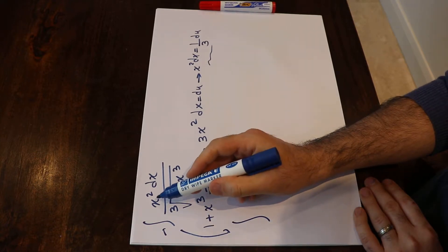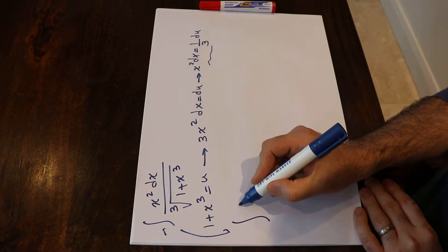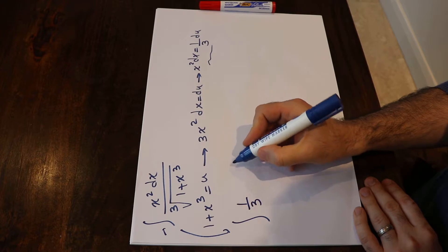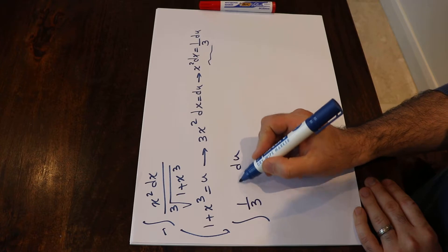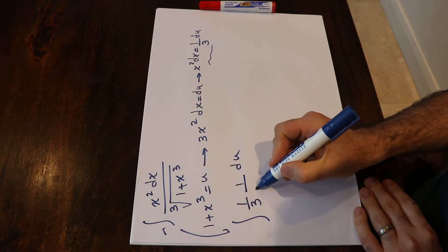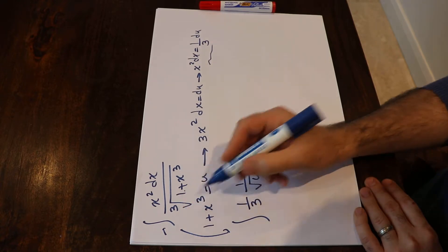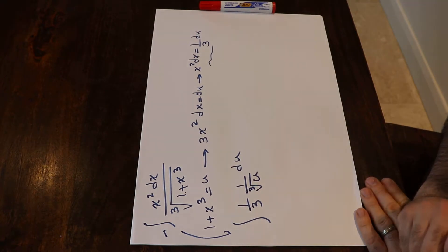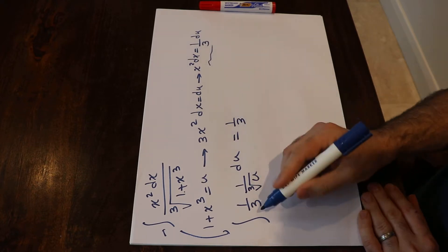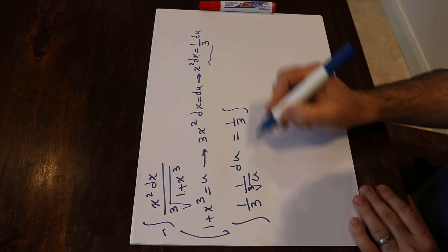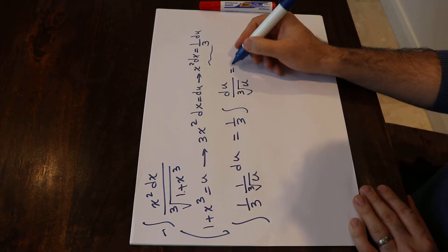Now substituting into the integral: instead of x² dx I write 1/3 du, and instead of 1 plus x³ I write u — specifically the third root of u. Since 1/3 is constant I can take it out, giving 1/3 times the integral of du divided by the third root of u, which equals 1/3 times the integral of u to the power of minus 1/3 du.